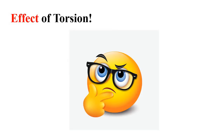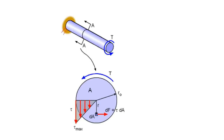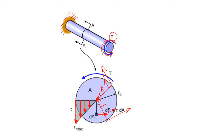Before discussing the effect of torsion on the structure, let's understand the basics. Consider a shaft fixed at one end with torsion applied at the other. The stress distribution is linear — it is zero at the center and maximum at the outermost fiber. This holds true in all directions: maximum at the outer edge, reducing to zero at the center.